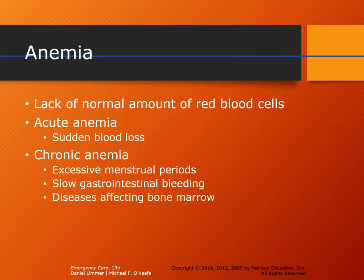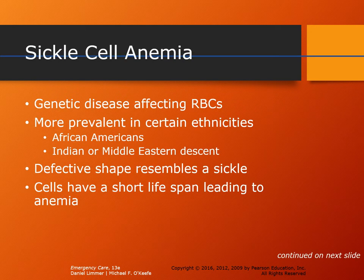Let's talk about anemia — a lack of normal red blood cells. This can happen due to an acute cause like trauma with sudden blood loss, or a chronic problem such as excessive menstrual periods, slow GI bleeds, or diseases that affect bone marrow.